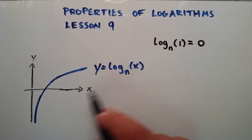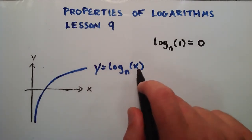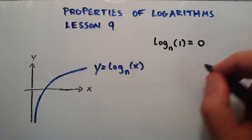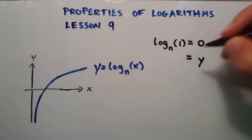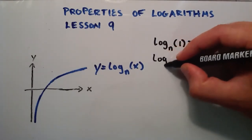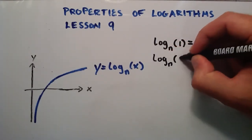So if we're looking at this function that I've graphed here, y equals log base n of x, then basically it's the same thing as I've written here. This would be our y and that would be equal to log base n of x.